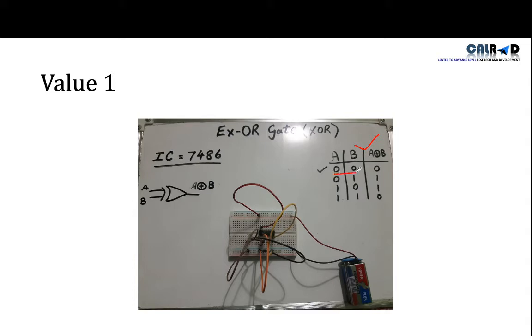So the first value is if we give both zero input, then what will be output? According to the table it will be zero. This means LED should not blink. So where is our orange and black wire? These are our orange and black wires. We put on the negative terminal and you can see our LED is still not on, so this means this is proved.